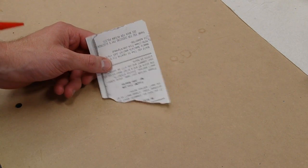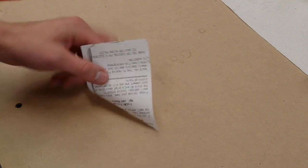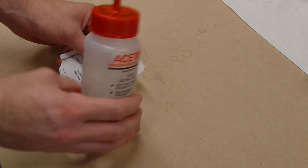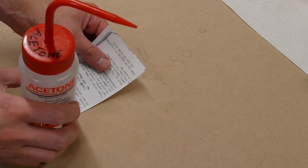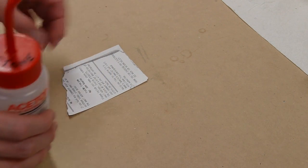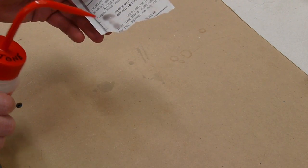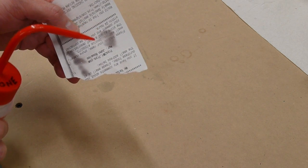Hey everyone, I found this interesting effect. This is a standard receipt from a thermal printer, and I've got a wash bottle of acetone here where I've removed the down tube. So when I squeeze the bottle, I just get some vapor out. Look what happens to the receipt.